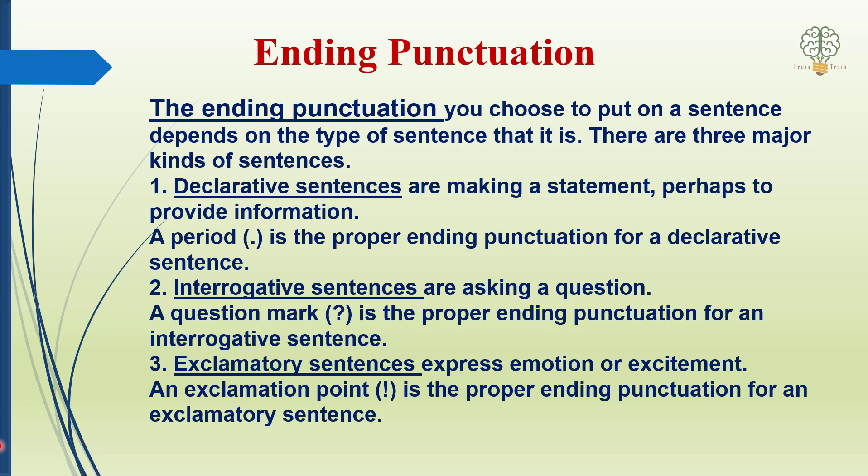The punctuation which is used at the end of the sentence. For ending punctuation, you choose to put it on a sentence depending on the type of sentence that it is. You need to see — sentence ki, jumla ki, kis qisem ki zarurat hai — usko dekhte hue ki kaisa jumla hai, isse tarah se ham istamal karte hain.